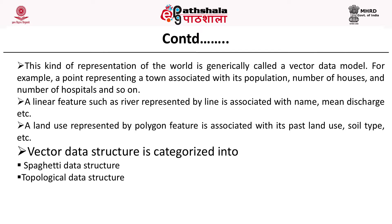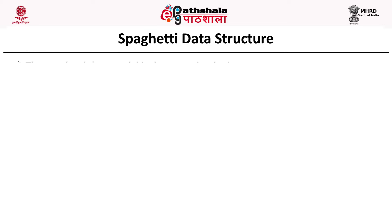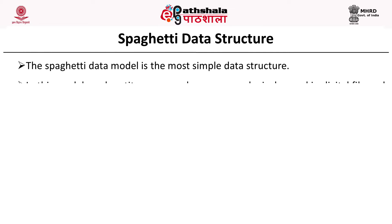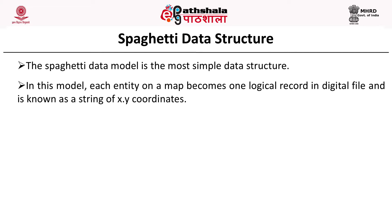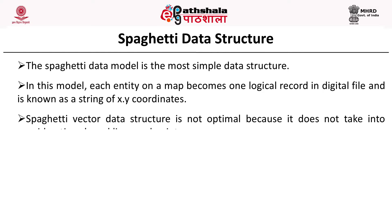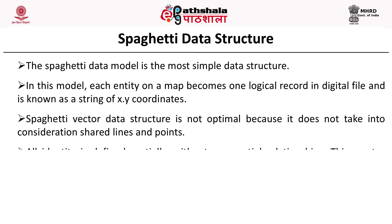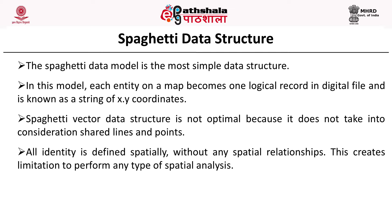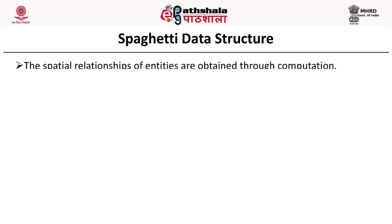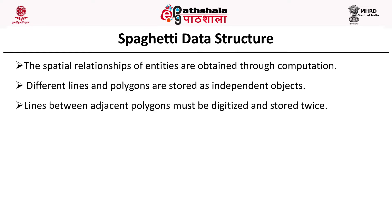The vector data structure is categorized into the spaghetti data structure and the topological data structure. The spaghetti data model is the most simple data structure, where each entity on a map becomes one logical record in a digital file known as a string of x-y coordinates. This structure is not optimal because it does not take into consideration shared lines and points. All identity is defined spatially without any spatial relationships, creating a limitation to perform spatial analysis. Different lines and polygons are stored as independent objects, and lines between adjacent polygons must be digitized and stored twice.